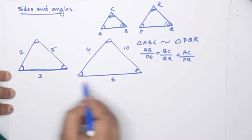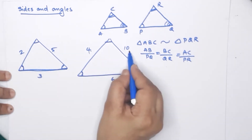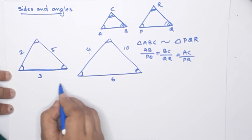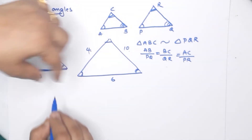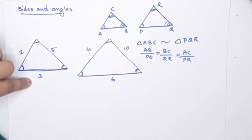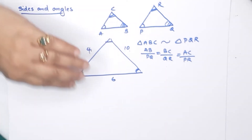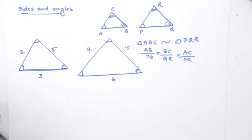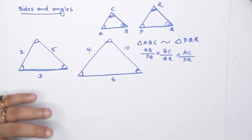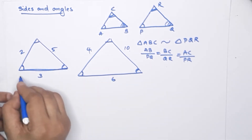So it is 3 by 6, which equals 1 by 2. And 2 by 4 equals 1 by 2, and 5 by 10 equals 1 by 2. That is why this is increased by a scale of 2 — because it is multiplied by 2: 3 into 2, 2 into 2, 5 into 2. The sides are increased by the same scale, and automatically the angles are equal.